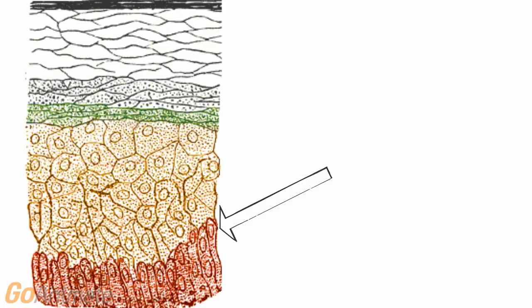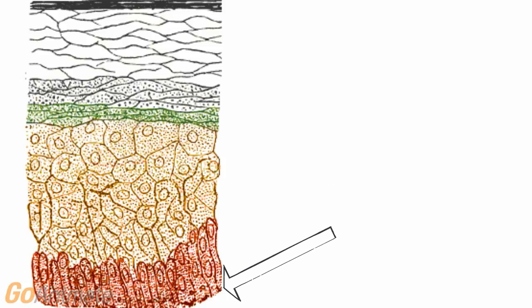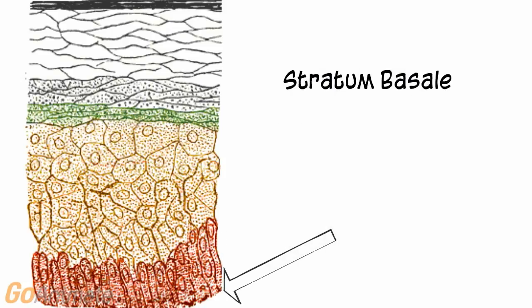The stratum basale or basal cell layer contains epidermal stem cells. This is the deepest layer of the epidermis. It consists of one layer of cells that divide and begin their migration to the superficial layers. This is the layer where basal cell cancer develops.